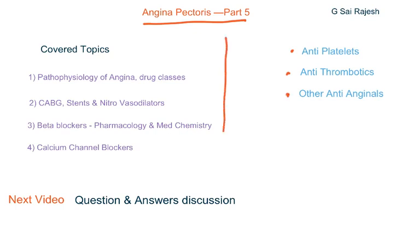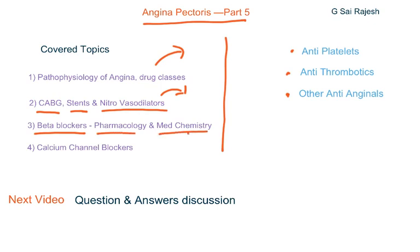Till now, we have covered all these topics. In lecture 1, I discussed about the pathophysiology of angina and drug classes used to treat that condition. In the second lecture, I covered surgical intervention procedures like coronary artery bypass surgery and stent deployment, along with nitrovasodilators. In the third lecture, I covered beta blockers — their pharmacology as well as medicinal chemistry aspects like structure, SAR, and synthesis.